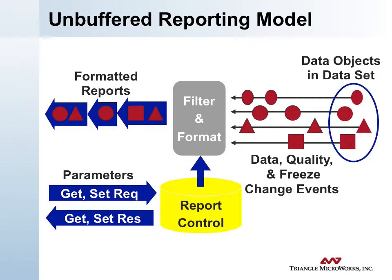This iconic view shows how the unbuffered reporting model works. On the left, we have data objects within a data set — the oval with a circle, triangle, and square inside shows the actual data objects named within the data set. As changes occur to that data, we see a flow from right to left of the values occurring as the change events occur. There's some logic within the 61850 model that does filtering and formatting of those changes, turning that sequence of changes into a sequence of messages. Each message can contain the value of one or more changes.